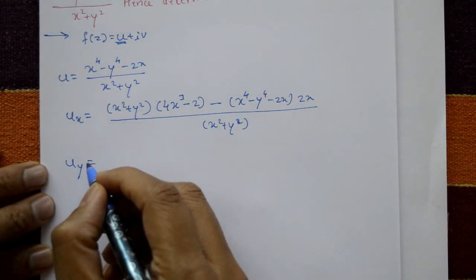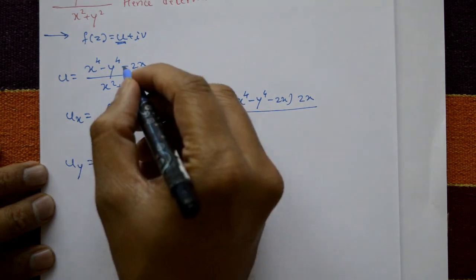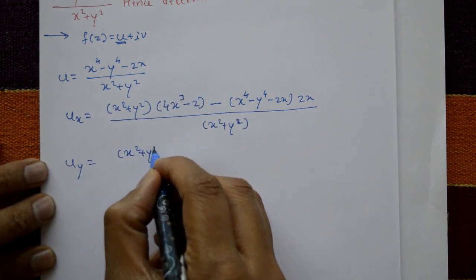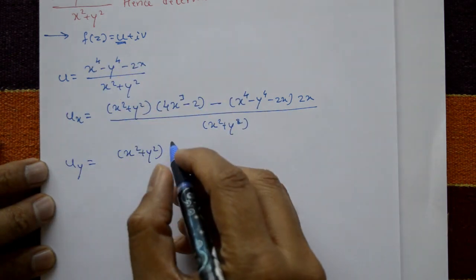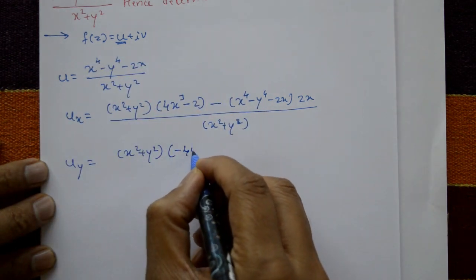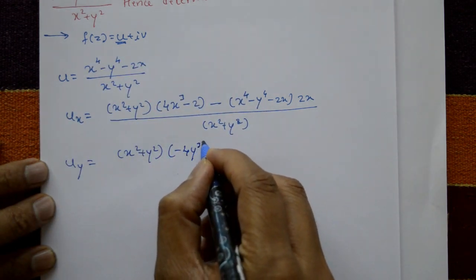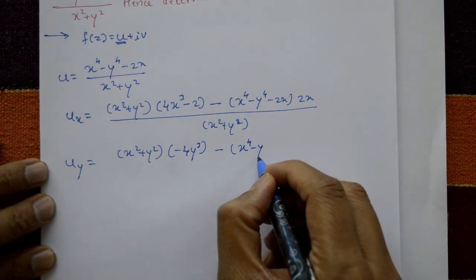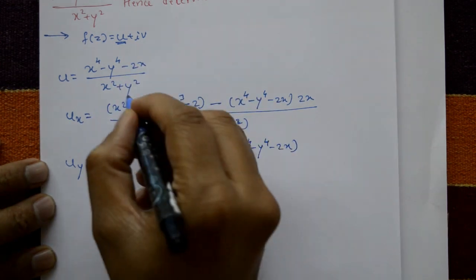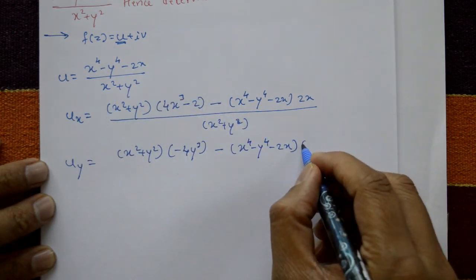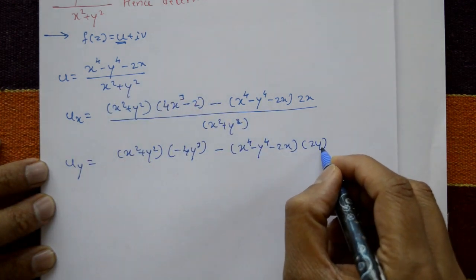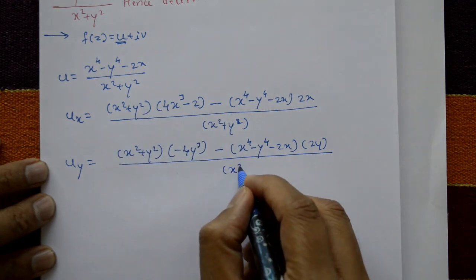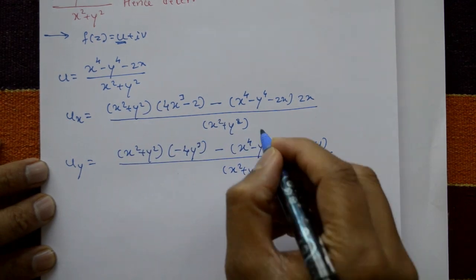Next, differentiate u with respect to y partially. Again using the quotient rule: (x² + y²) times the derivative of the numerator gives (-4y³), minus the numerator (x⁴ - y⁴ - 2x) times the derivative of the denominator (2y), divided by (x² + y²) whole square.